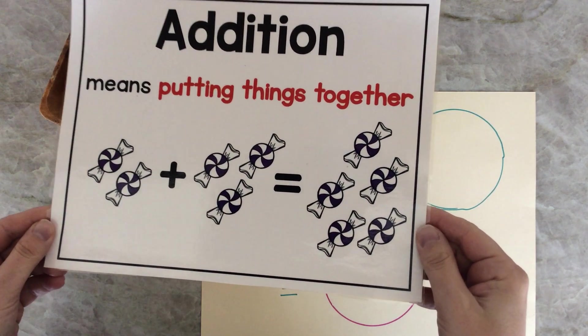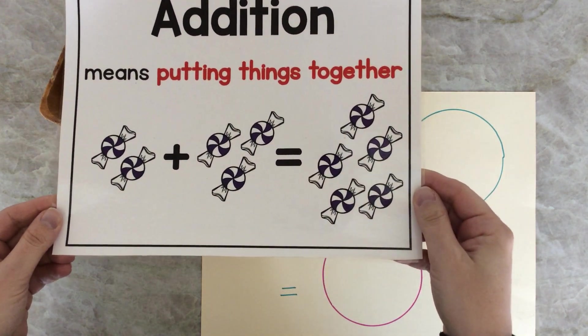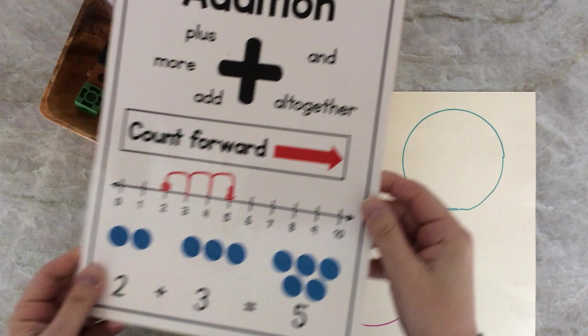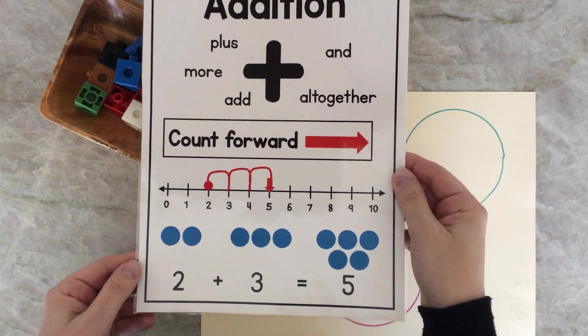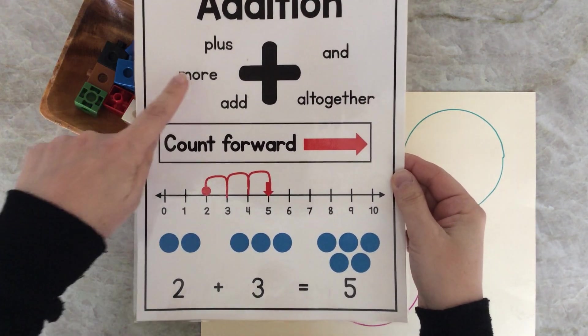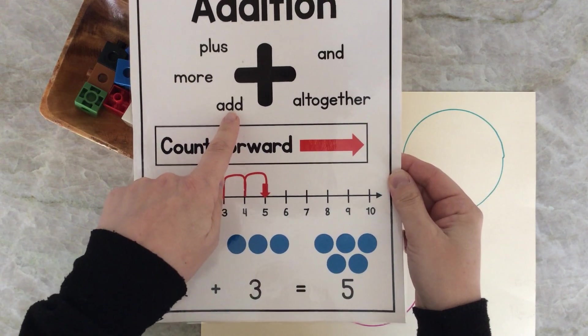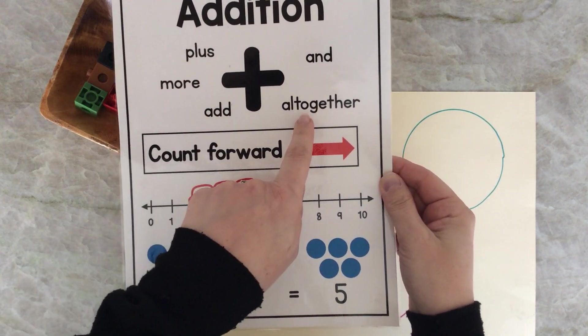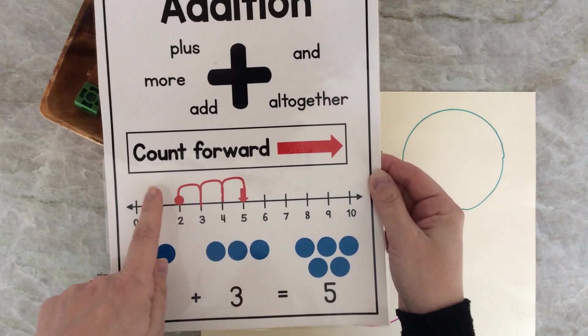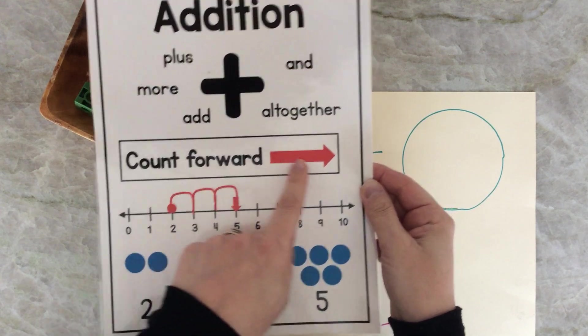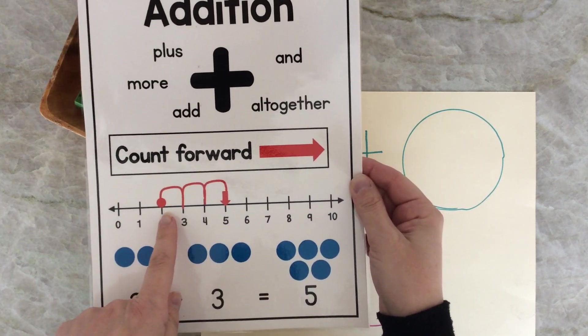Addition means putting things together. When we talk about addition, we use words like plus, more, add, and altogether. And when we talk about addition, we have to remember that we're counting forward, the numbers get bigger.